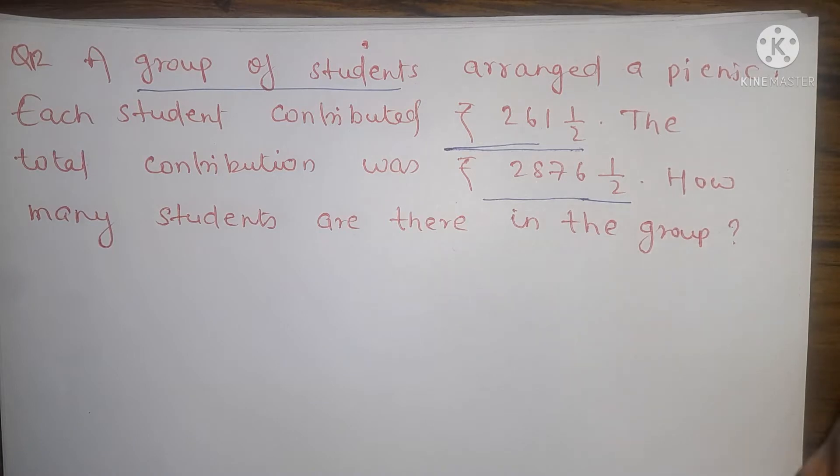One money and the money - that money to one student is divided. You will make your money and the money. How much number of students will come to picnic?